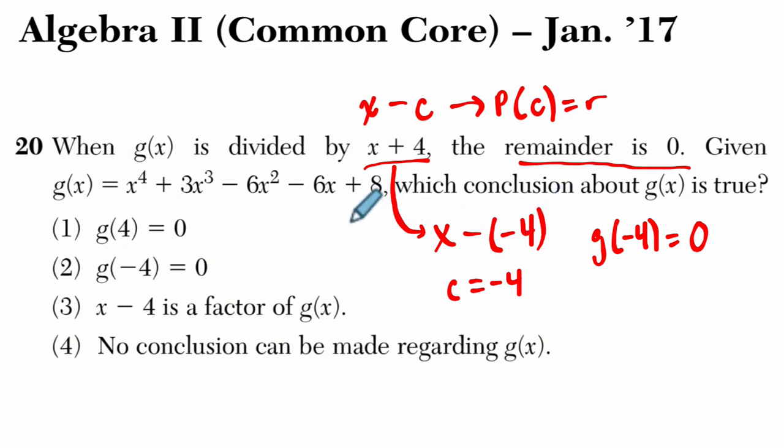And here, that's exactly what's happening. So, which conclusion about g of x is true? Right? Okay. x minus 4 is a factor of g of x. No, no, we are looking at x minus negative 4. That's not true.